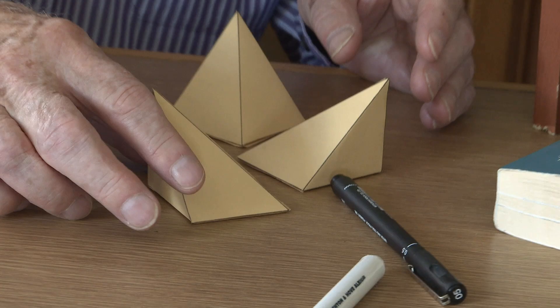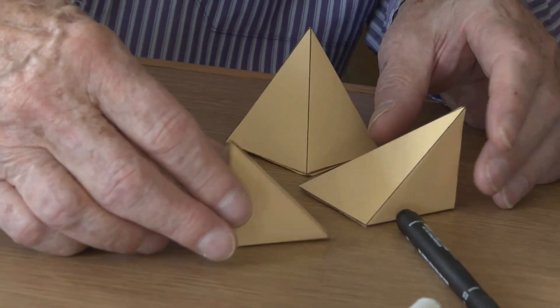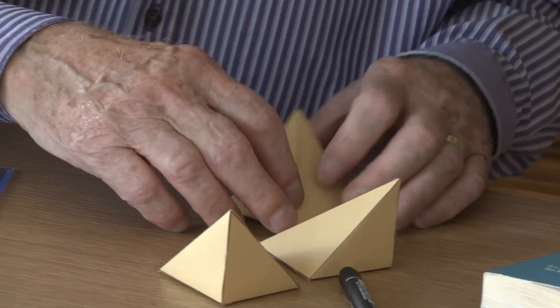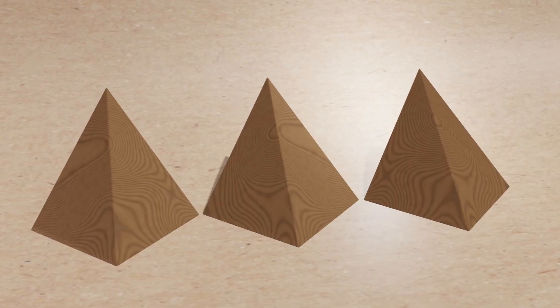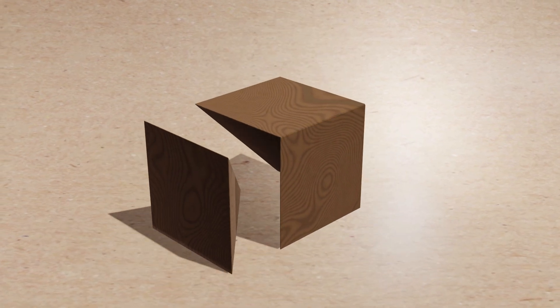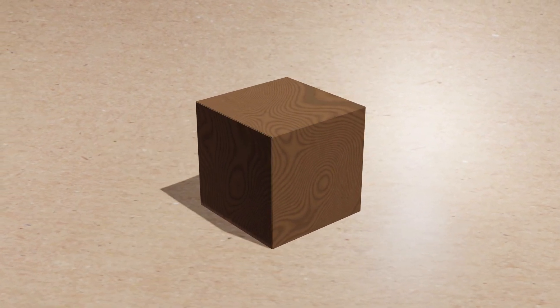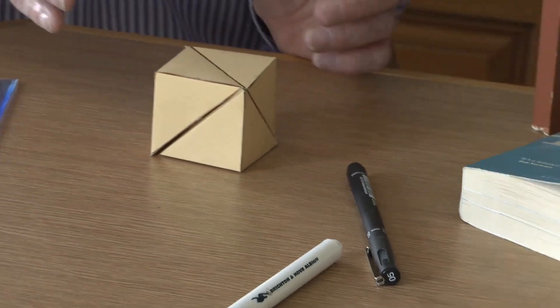And I can prove that because I've got three pyramids here. Can you see? Instead of the point being in the middle, it's on one corner. And because of that, you can actually reassemble them, these three identical pyramids, to make a cube. Which proves that each is one third of the volume of the cube.